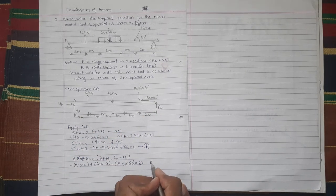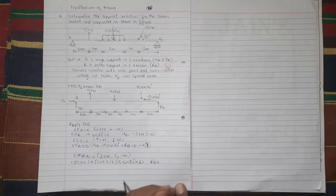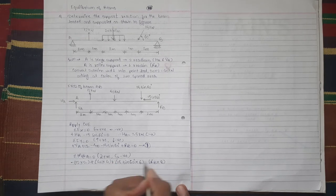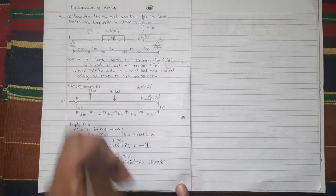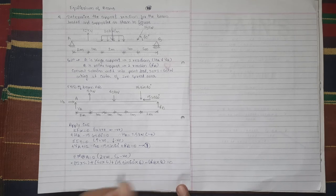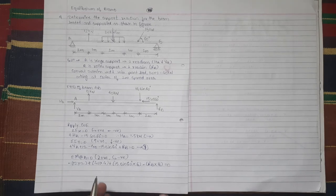RB is acting at distance of 8 meter and it is going to create anti-clockwise moment about point A, so minus = 0. Here there is only one unknown RB.